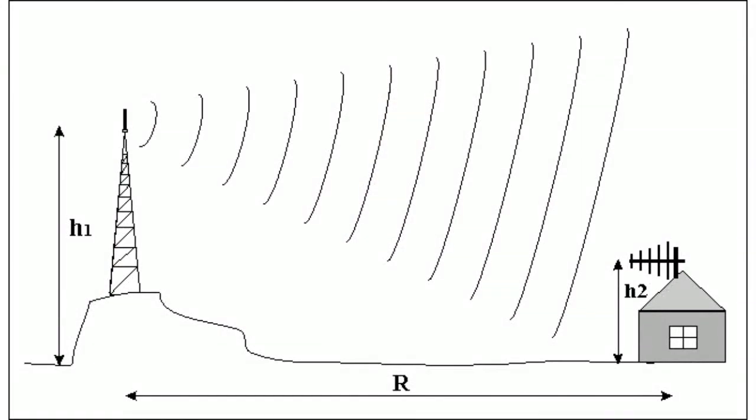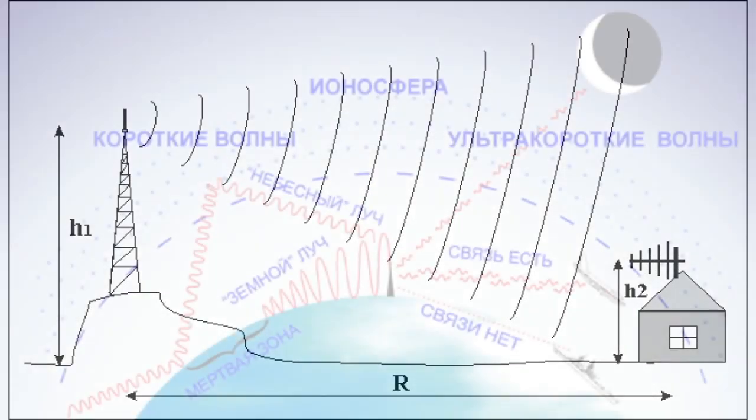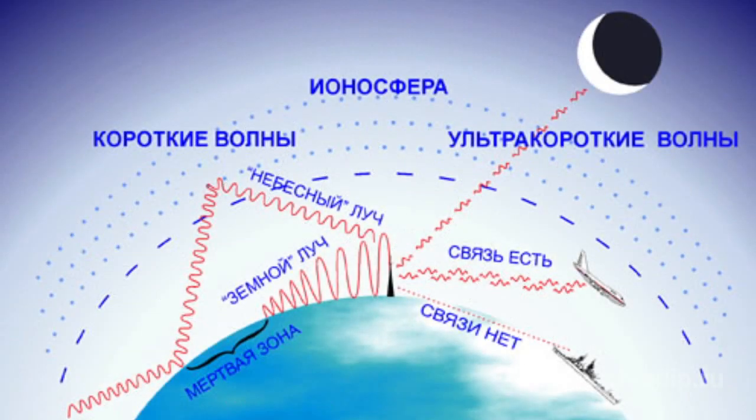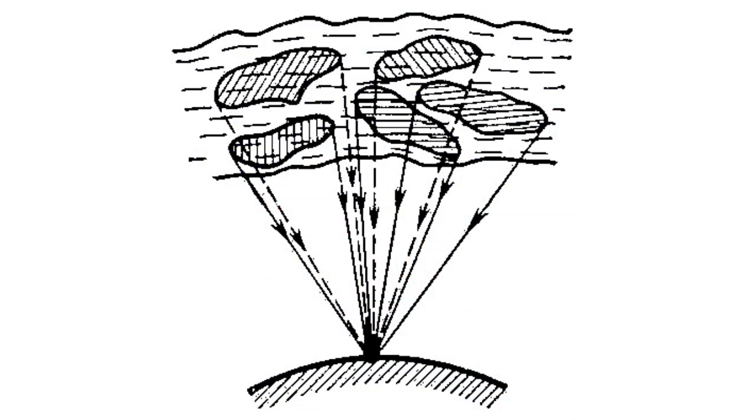Now let's briefly describe how radio waves propagate through space. Firstly, all radio waves are classified into three types by propagation mode. They are ground wave propagation, ionospheric propagation, and tropospheric propagation.